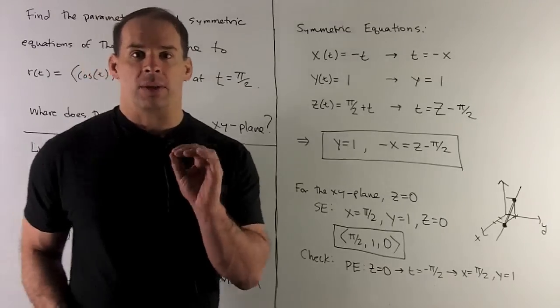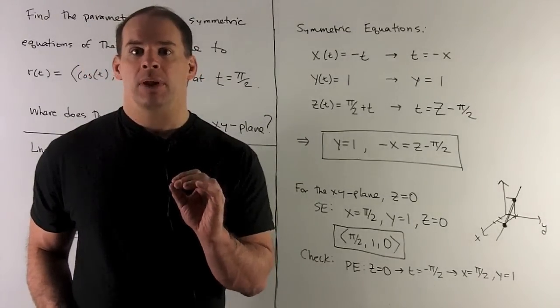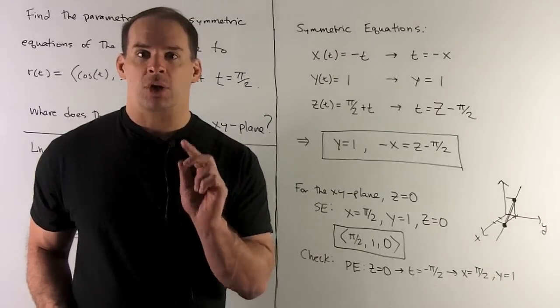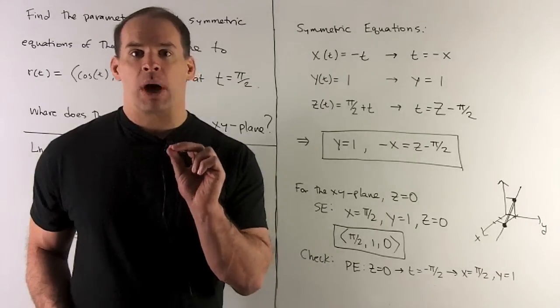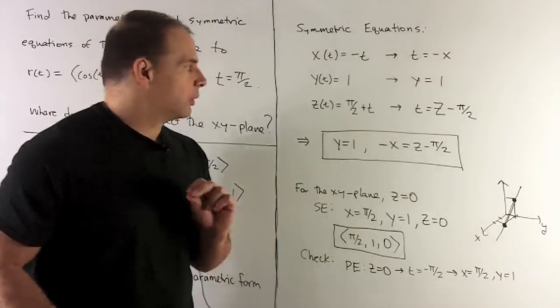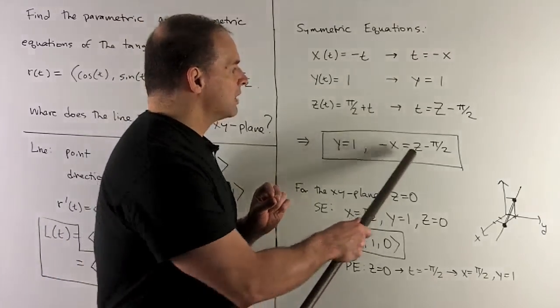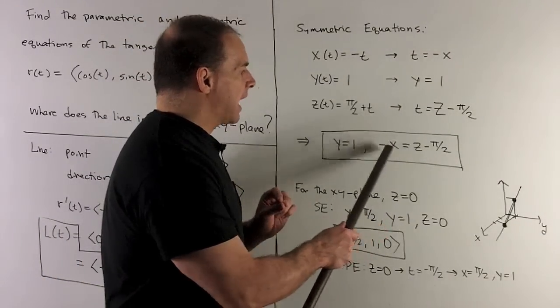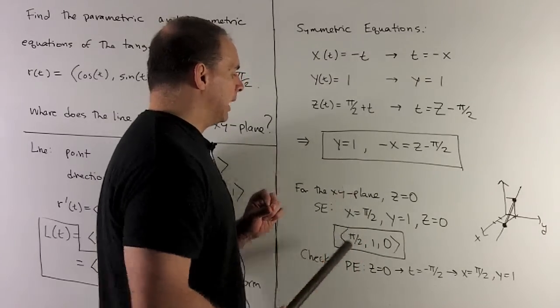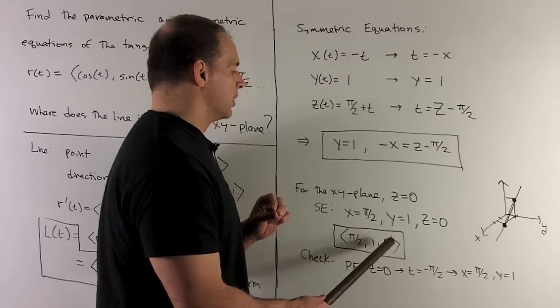Now, to find the point where we intersect the xy-plane, there are two ways we can go. So the first way, we take our symmetric equations. Now, the xy-plane is going to be where z = 0. So I'll set z = 0, which gives me x = π/2. We're given that y is always 1, so our point's going to be (π/2, 1, 0).